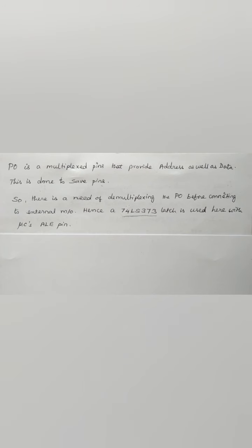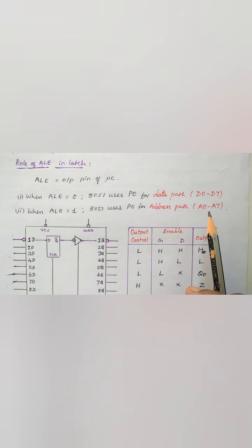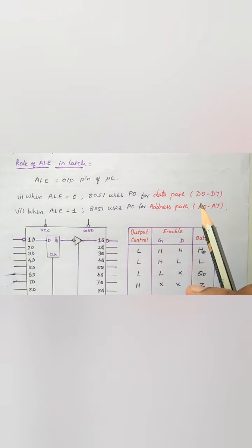The ALE pin is used for the latch. ALE is an output pin of the microcontroller. When ALE is made 0, the 8051 uses Port 0 for data path, meaning Port 0 acts as data lines and data transfer takes place between the controller and memory. When ALE is made 1, the 8051 uses Port 0 for address path A0 to A7. Using this pin, we demultiplex the address and data lines of Port 0.